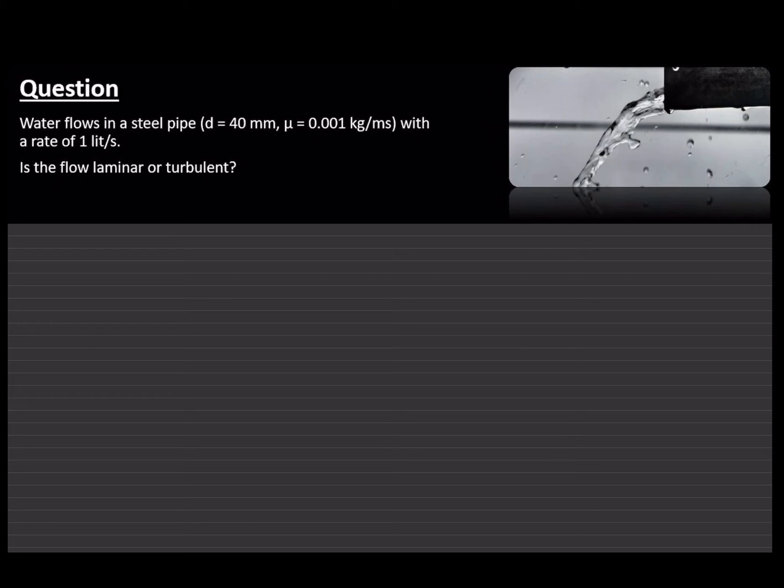Now, if we need to determine if a flow is going to be laminar or turbulent, we need to work out what the Reynolds number for the flowing liquid is going to be. Because we know that if the Reynolds number is higher than 4000, then we can say that the flow is turbulent.